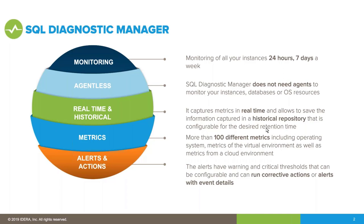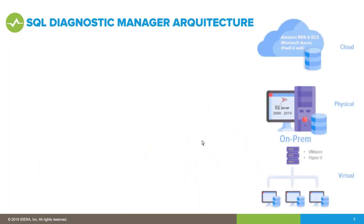Every metric has at least one or two thresholds — critical or warning. When something goes above that level, we can take action. The most common action is to send an email with event details. We can also run corrective actions: for example, if a disk is getting low, you can run a PowerShell script, batch file, SQL Agent job, or SQL command to fix that problem.